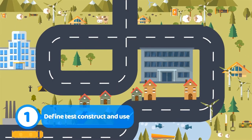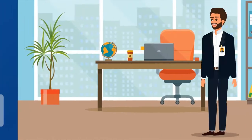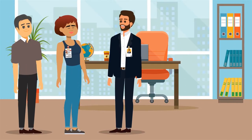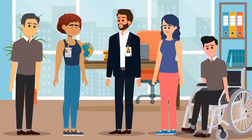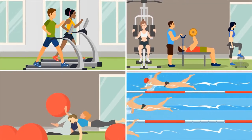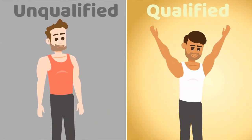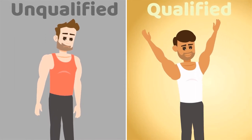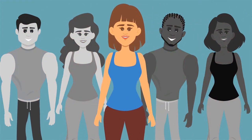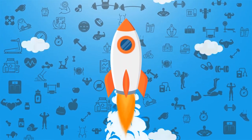Step 1: Define test construct and use. What are the things needed for someone to succeed as a personal trainer? Aaron invites experts such as currently successful trainers, teachers at personal training schools, and other knowledgeable persons in the fitness industry to define the requisite knowledge and skills for working as a personal trainer. He also specifies the goal of the test: to classify people into two categories — qualified and unqualified — rather than ranking candidates or selecting the best trainer on the planet. This specific goal helps determine what kinds of items he is going to develop.